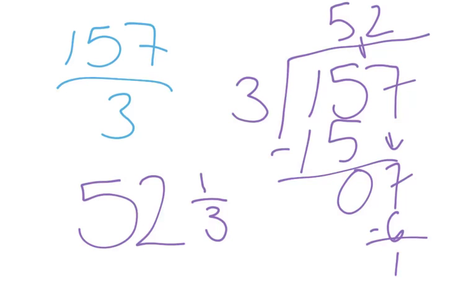And that one little piece is one out of the three that would be required to make a whole. So you have 52 wholes and one third of another whole. The one comes from our remainder here, and the three is the same denominator that I was talking about in my original fraction, because I'm not changing the size of these pieces. I'm just regrouping some of them into whole numbers.